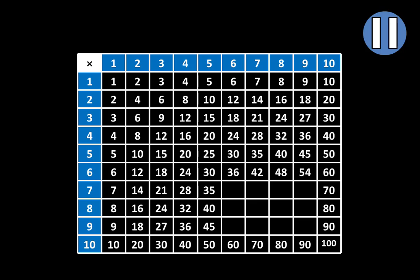Let's move to the next row. The first missing product is 42. The next is 49. The next missing product is 56. And the next missing product is 63.